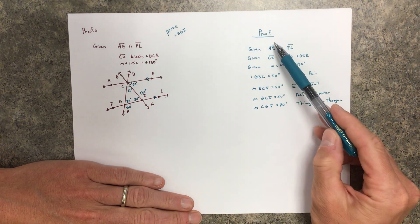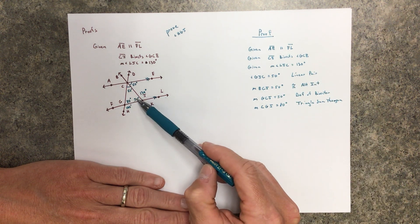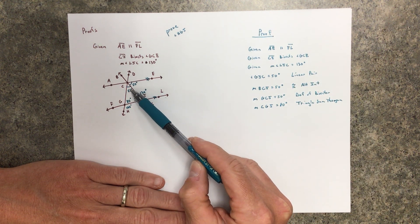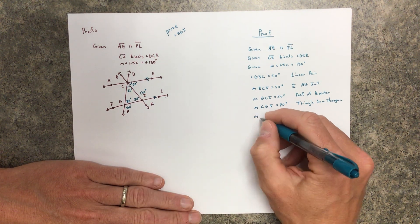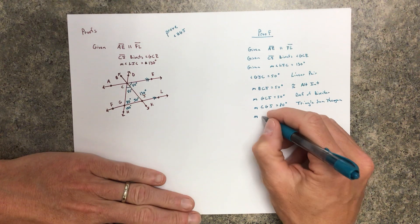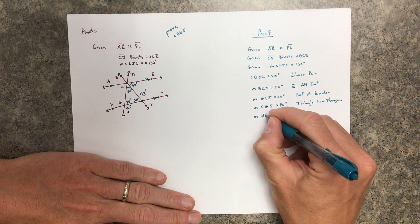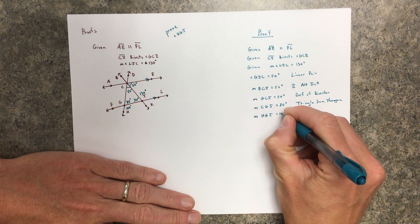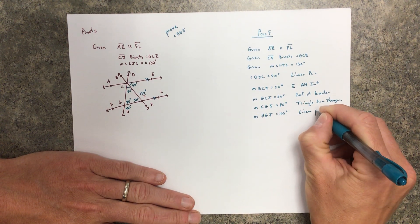The important thing is that we start with the givens, and we justified linear pairs. We justified that 50, that 50, that 50, and now that 80. And the last one is that we know the measure of what we wanted, HGJ, is 100 degrees because of a linear pair.